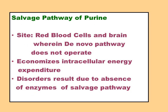The salvage pathway for purines: salvage means property saved from destruction or wastage. Instead of letting a biomolecule go to waste, it is utilized for an important pathway. The site of the salvage pathway is the RBC, WBC, lymphocytes, erythrocytes, and the brain — where the de novo pathway does not operate. De novo synthesis occurs in the liver in the cytoplasm. The salvage pathway economizes internal energy, saving ATP.